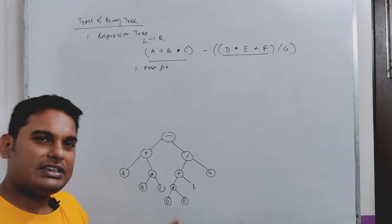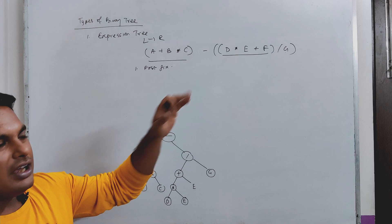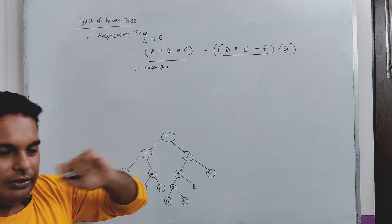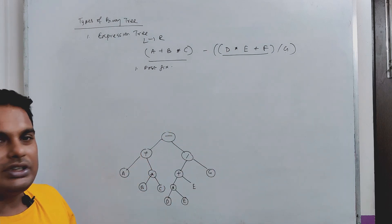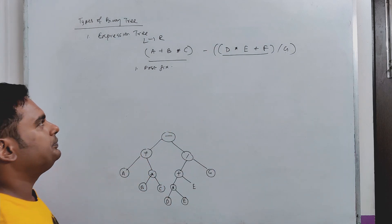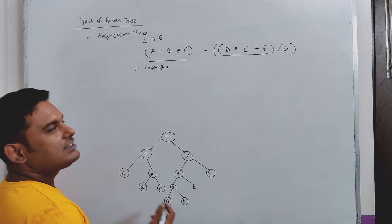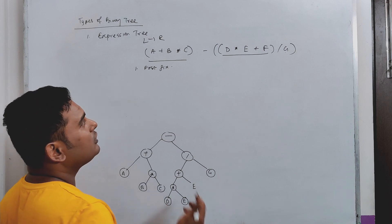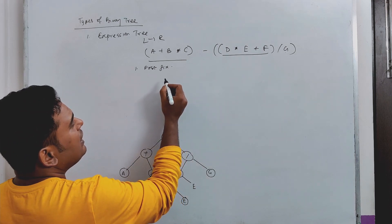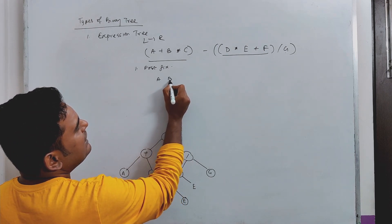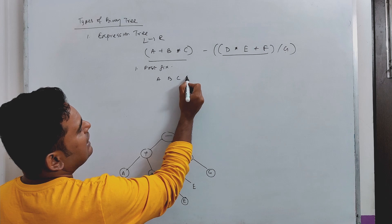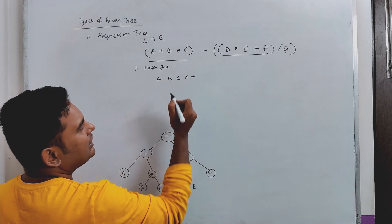You can see the data structure playlist for more details. After converting to postfix, we get: A, B, C, star, plus.